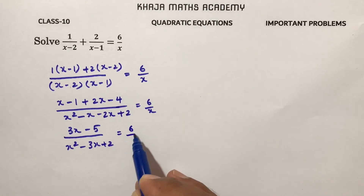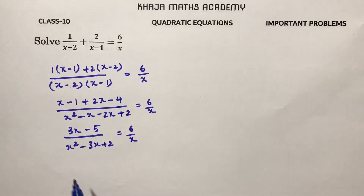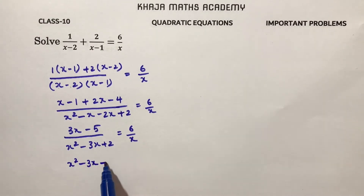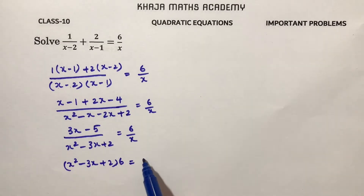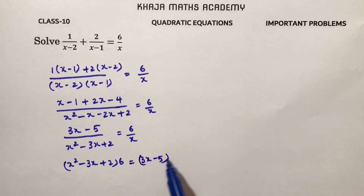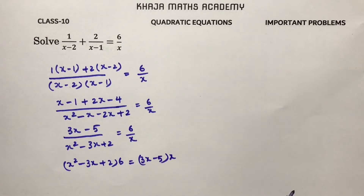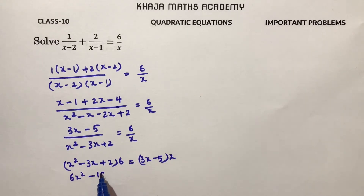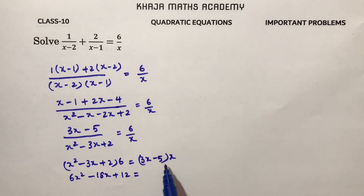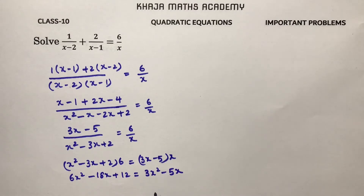Now cross multiply: (x squared minus 3x plus 2) into 6 equals (3x minus 5) into x. Expanding the left side: 6x squared minus 18x plus 12. Expanding the right side: 3x squared minus 5x.